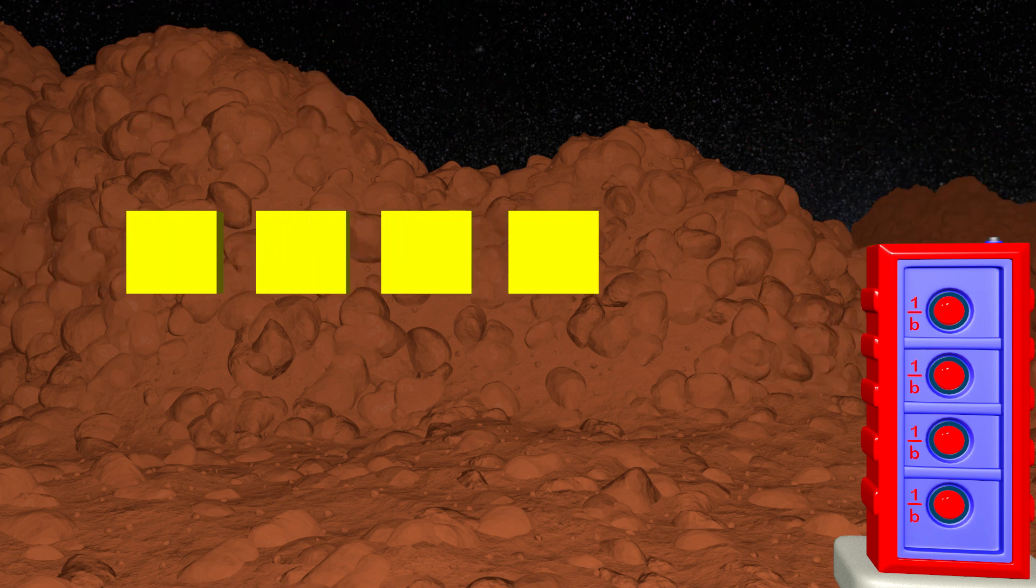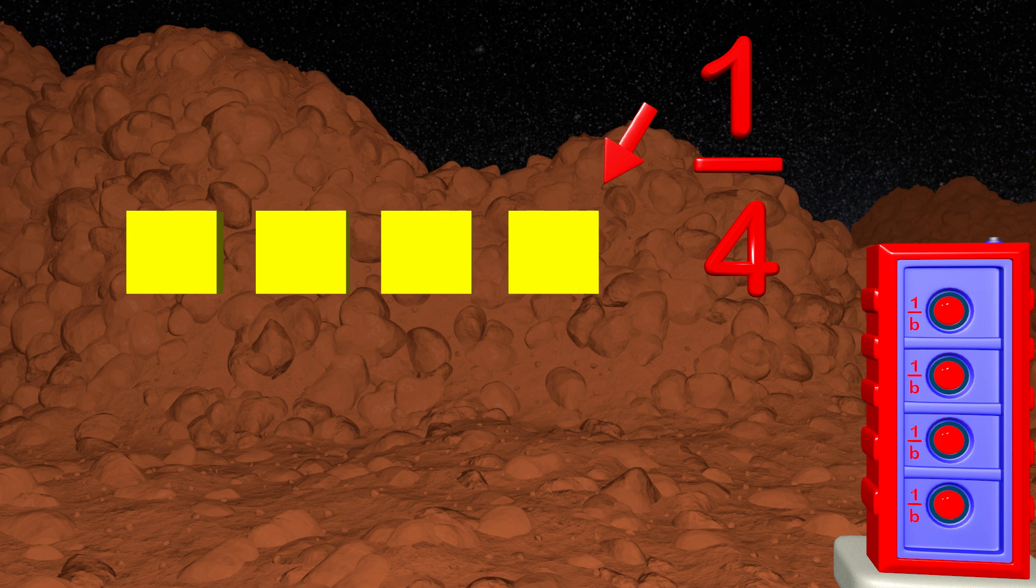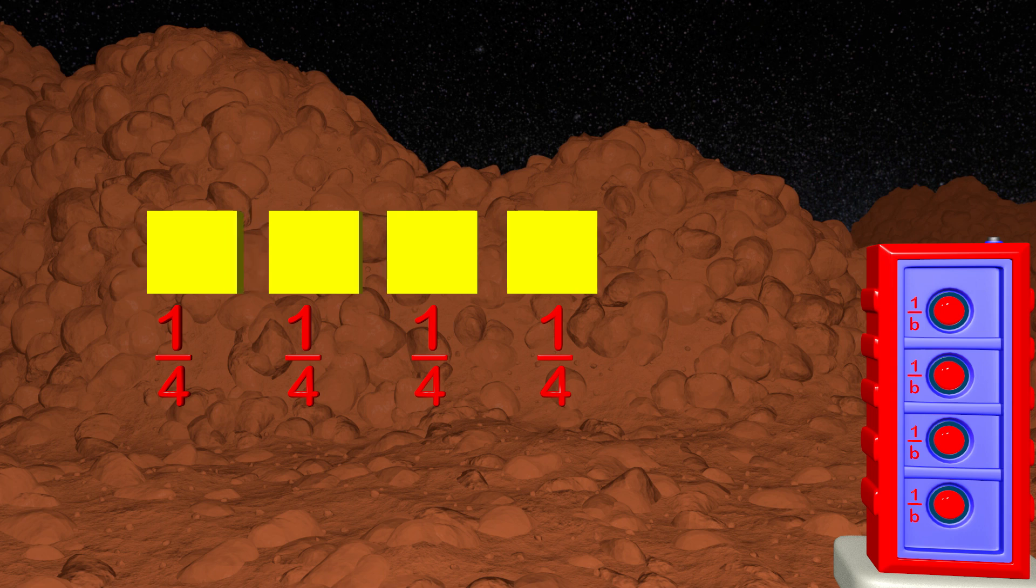Here is a rectangle that is divided into 4 parts. Can you tell me what the fraction is for just this part here? This is 1 over 4, or 1 fourth. We can see that each of these parts is 1 fourth of the entire rectangle. When you put it all together, they make one whole rectangle.